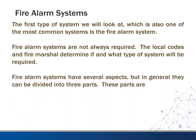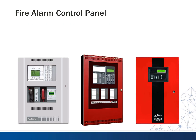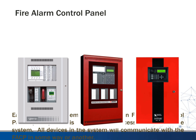Fire alarm systems have several aspects, but in general they can be divided into three main parts. Those parts are the fire alarm control panel, and in association with that are enunciator panels. Then initiation devices — what sends a signal to the control panel to let it know there's a problem. And then notification devices — once a problem is detected, this communicates to all the occupants in a building what's going on. In this lecture, we're going to talk about fire alarm control panels.